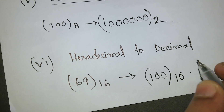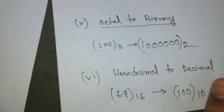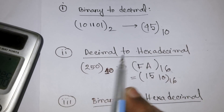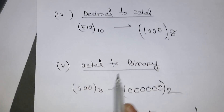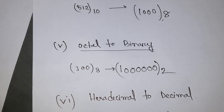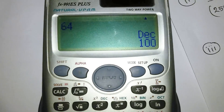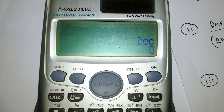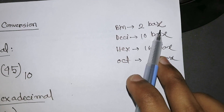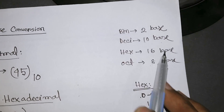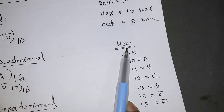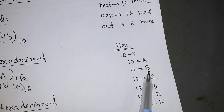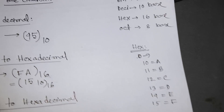To summarize, I've shown you: binary to decimal, decimal to hexadecimal, binary to hexadecimal, decimal to octal, octal to binary, and hexadecimal to decimal — all using the FX 991 ES Plus calculator. The key basics are: binary is base 2, decimal is base 10, hexadecimal is base 16, and octal is base 8. In hexadecimal, 10–15 are written as A–F.